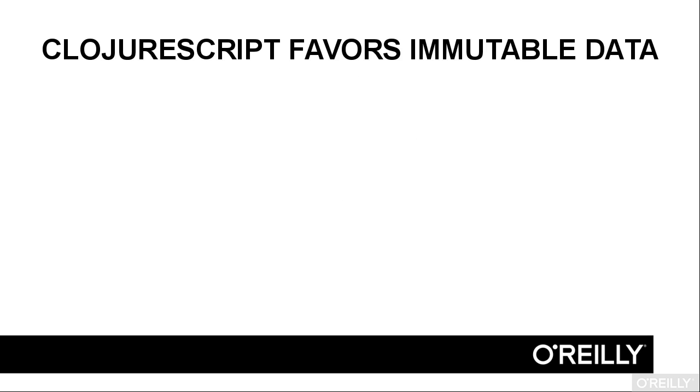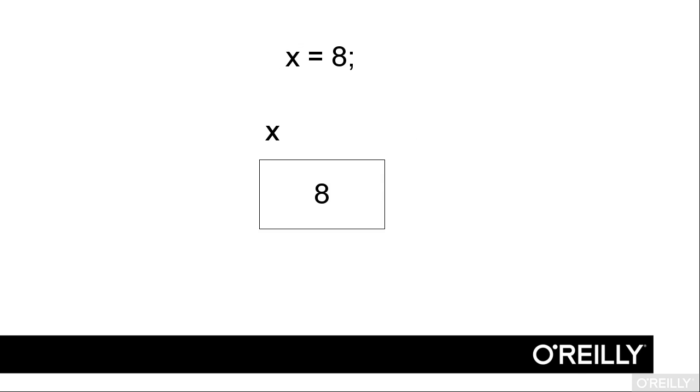ClojureScript encourages you to use immutable data. In JavaScript, when you say x equals 8, that means that 8 goes into a memory location named x. In ClojureScript, variables work much as they do in algebra. Saying x equals 8 simply means that the symbol x now stands for 8. In general, variables in ClojureScript are immutable. Once you bind a value to a symbol, as in x standing for 8, you don't change that value.